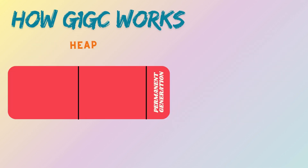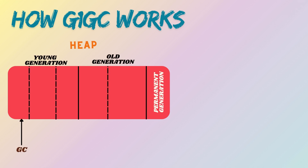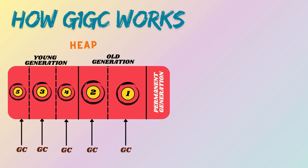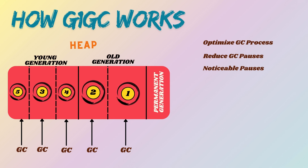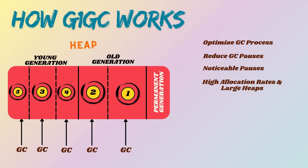G1GC divides the heap — young and old generation — into multiple regions and performs GC in parallel across these regions. It prioritizes regions with the most garbage, aiming to optimize the collection process and reduce pause times. However, G1GC still incurs noticeable pauses during its operations, especially in applications with high allocation rates and large heaps, such as those at Netflix.